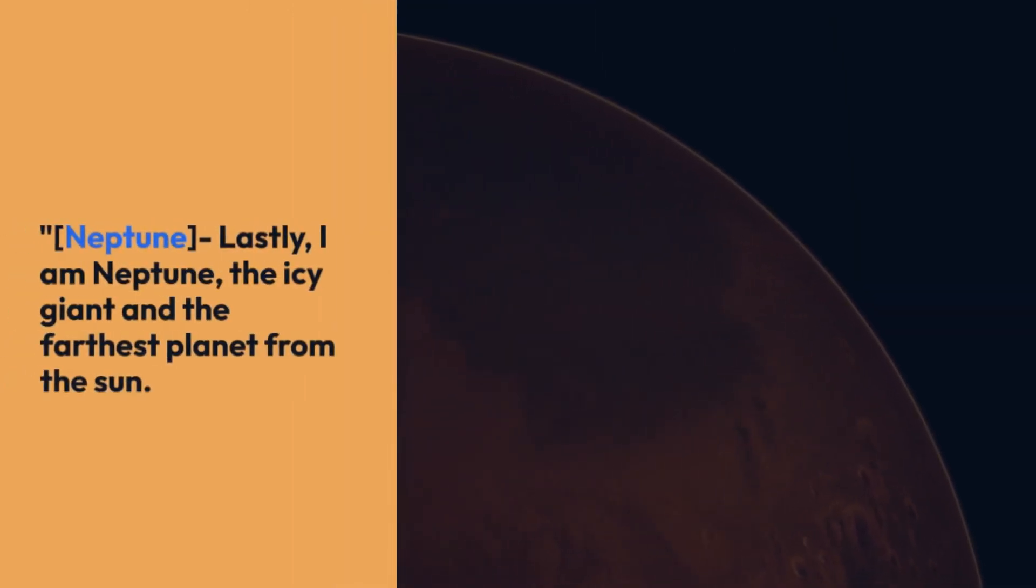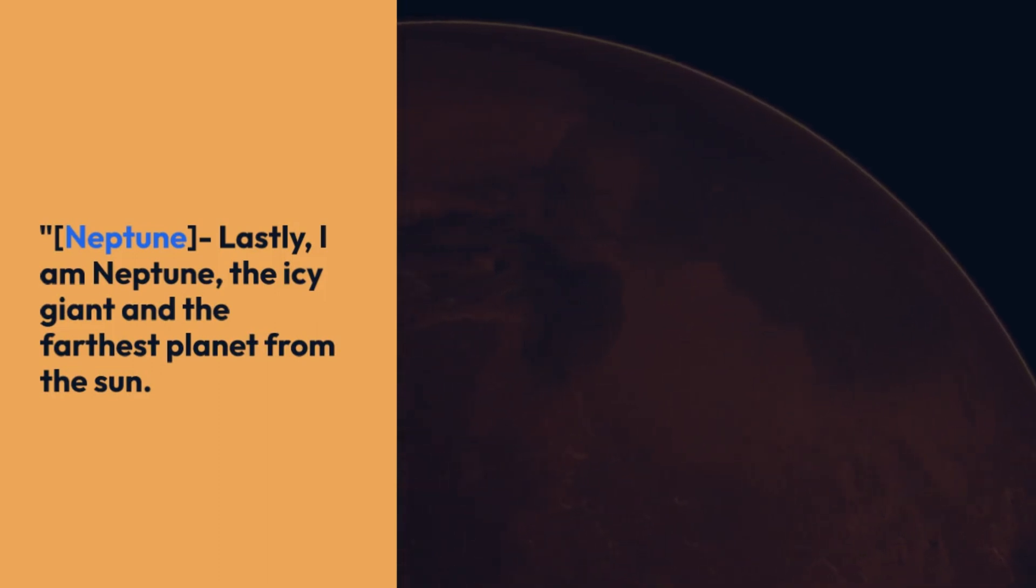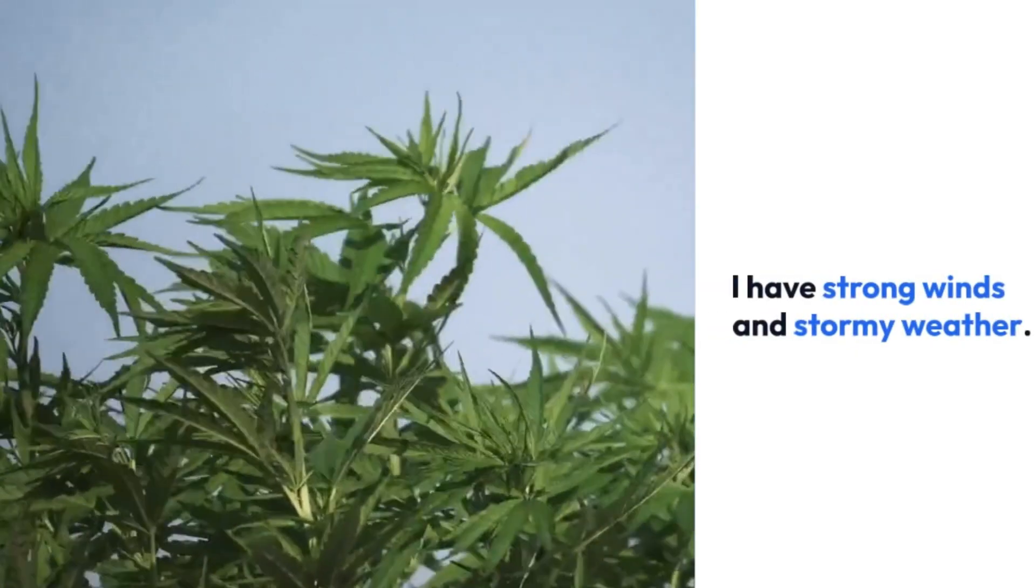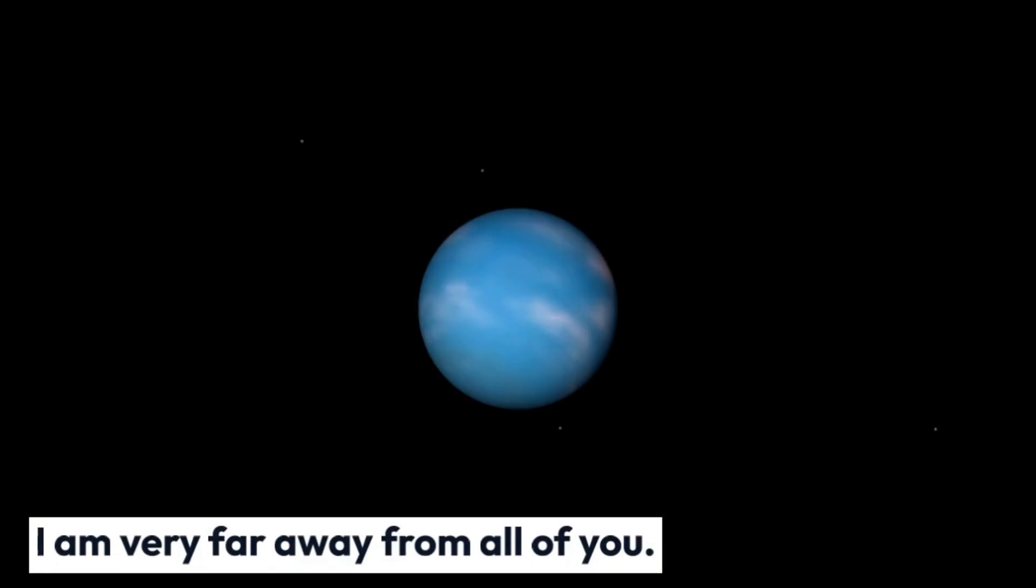Lastly, I am Neptune, the icy giant and farthest planet from the Sun. I have strong winds and stormy weather. I am very far away from you all. Up here, it is dark and cold.